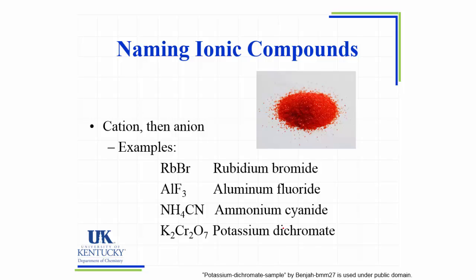Looking at some example names: RbBr is rubidium and bromine. We always name the cation first, then the anion, and change the ending from -ine of bromine to -ide of bromide — that's all we need. For AlF3, we have aluminum and fluorine, so the name becomes aluminum fluoride. We don't include subscripts in the name because aluminum has a 3+ charge and fluoride has a −1 charge, so it must be AlF3 to be electrically neutral.